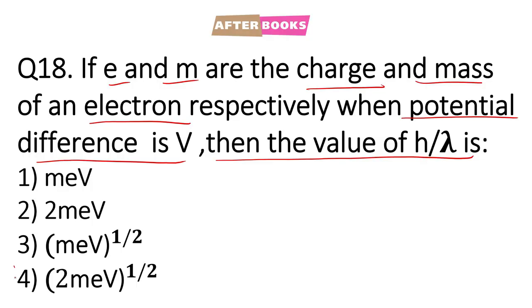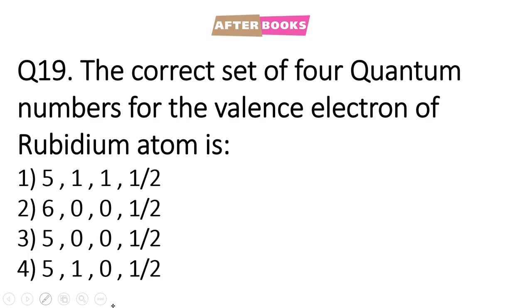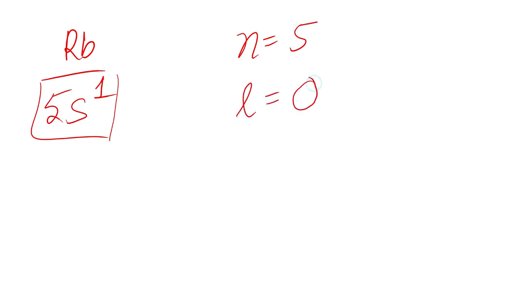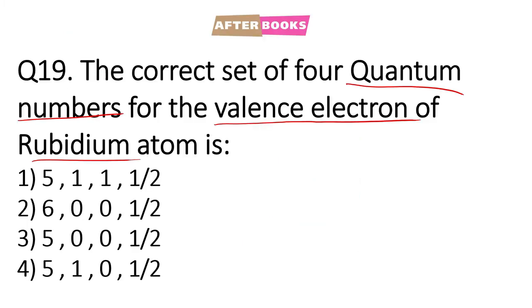Question number 19: Give the set of quantum numbers for the valence electron of rubidium. Rubidium is an alkali metal in the fifth period, so its outermost electronic configuration is 5s¹. From this: n = 5, l = 0 (for s orbital), m = 0, and s = +½. So the set of quantum numbers is 5, 0, 0, and +½.